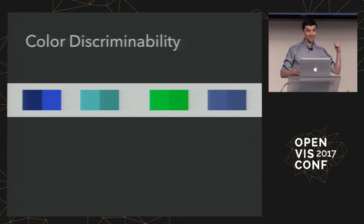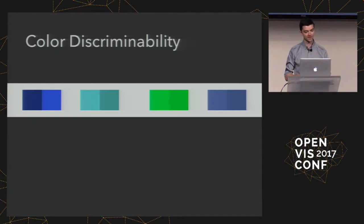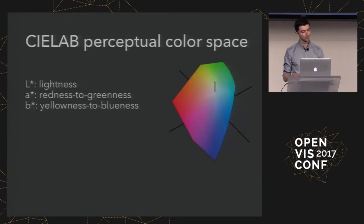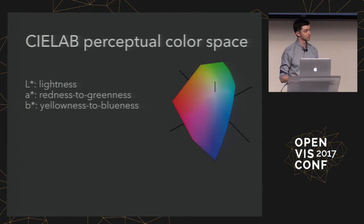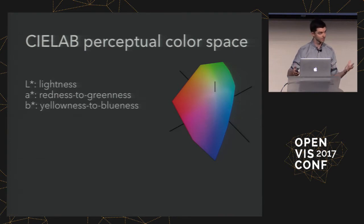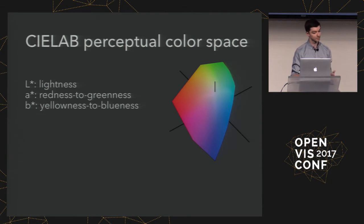For the purposes of this section, we'll focus specifically on color discriminability and how it relates to effectiveness. When we talk about discriminability and want to precisely measure it, we use perceptual color spaces. These are different from RGB color space, which your monitor uses. Instead, color is measured with lightness, redness to greenness, and yellowness to blueness.